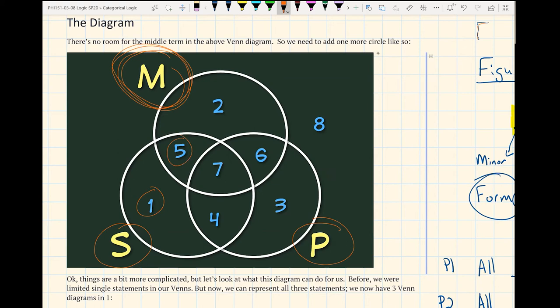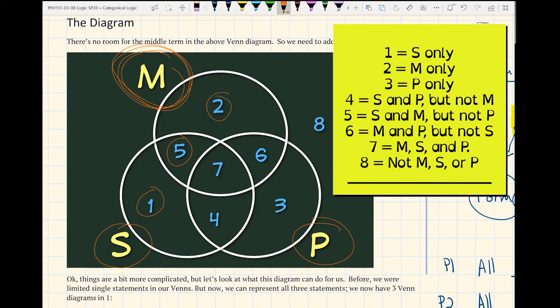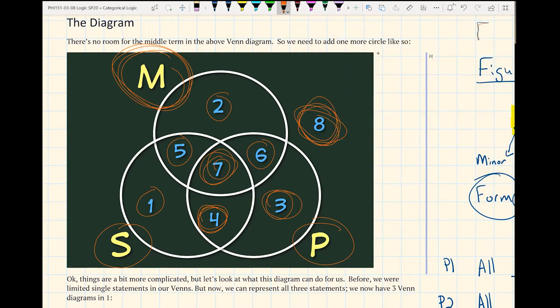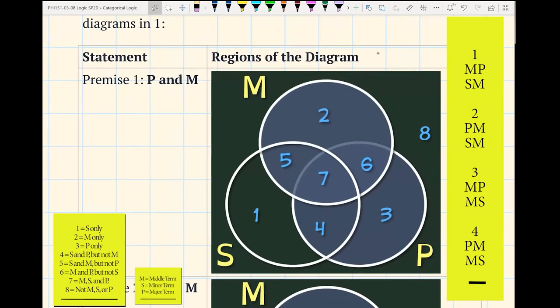You can see that we now have a bunch of different regions. Everything that's S, stuff that's both S and M, stuff that's just M, stuff here in region six is stuff that's just M and P. Three is stuff that's just P. You can see how this continues to go on. Four is S and P. Seven is all three classes. And then eight is just something outside of all of that.